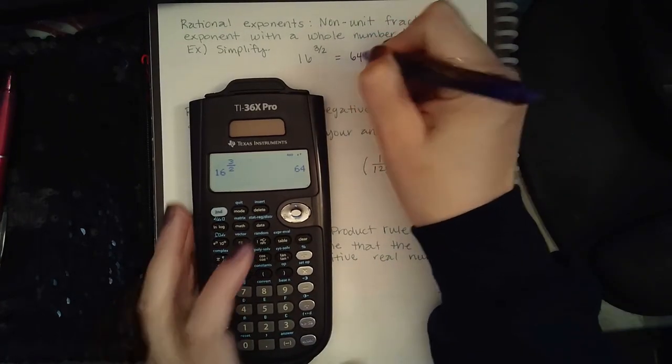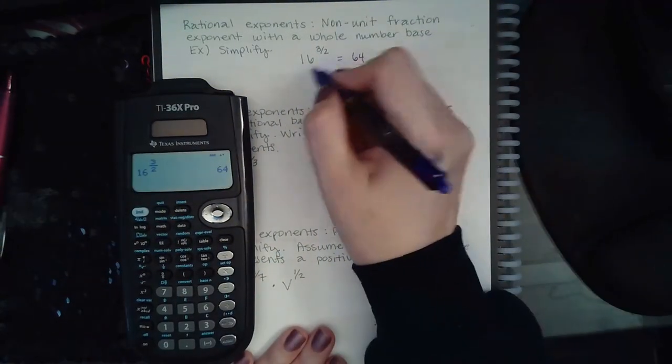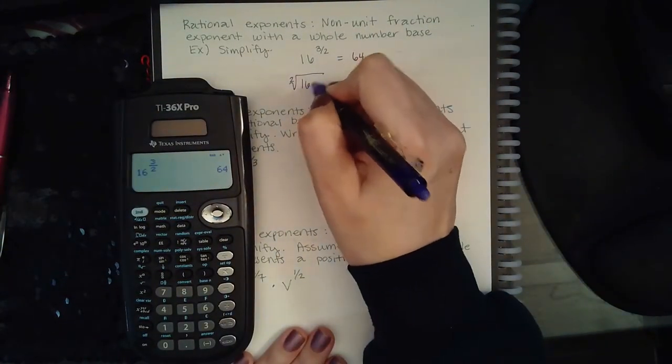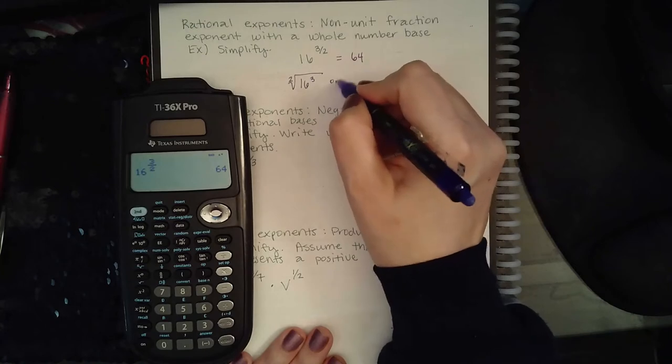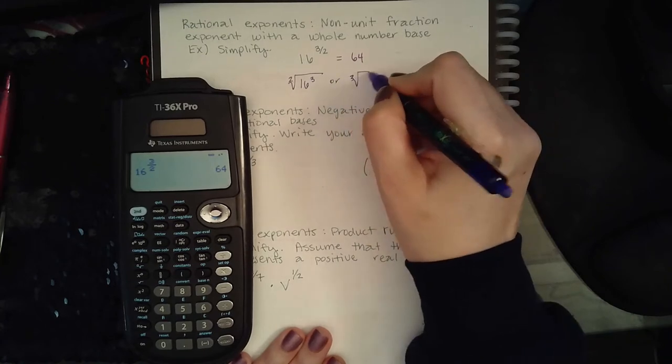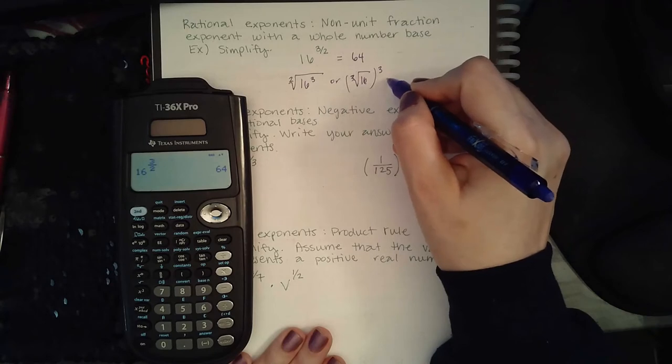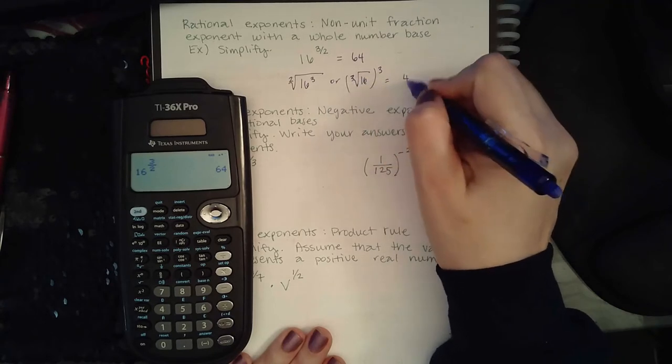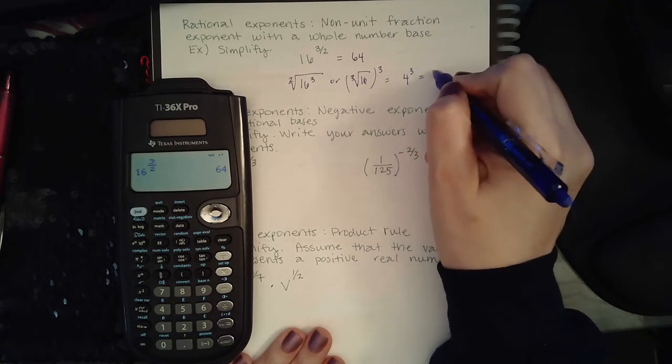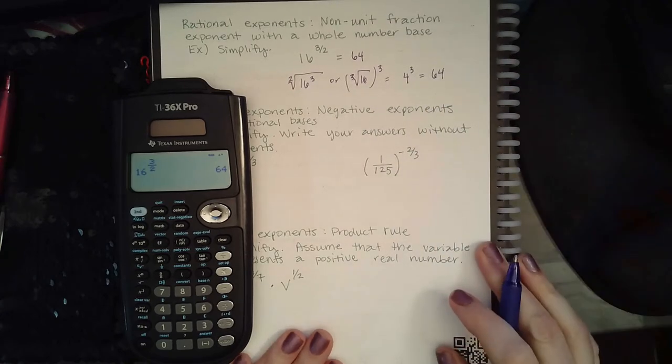Great. But again, if you were to convert into what it means, it means the square root of 16 to the third power, or I could write the square root of 16 to the third power, which is the same thing as saying the square root of 16 is 4 and 4 to the third power is 64.